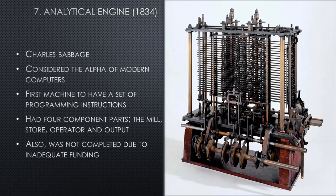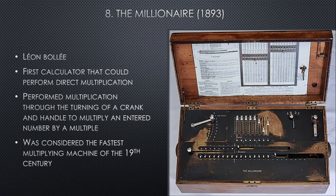Unfortunately, the Analytical Engine also wasn't completed due to inadequate funding. The Millionaire is another device invented in 1893 by Leon Bully. He invented this calculator and it became the first calculator that could perform direct multiplication. It performed multiplication through the turning of a crank and handle to multiply an entered number by a multiple. It was considered the fastest multiplying machine of the 19th century.